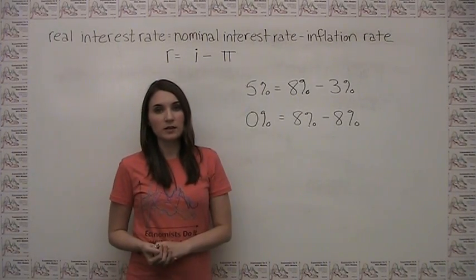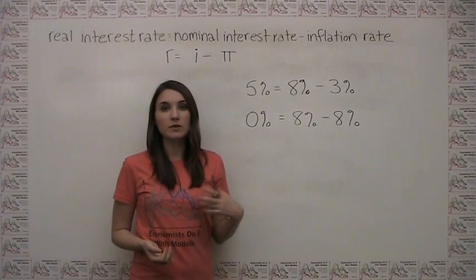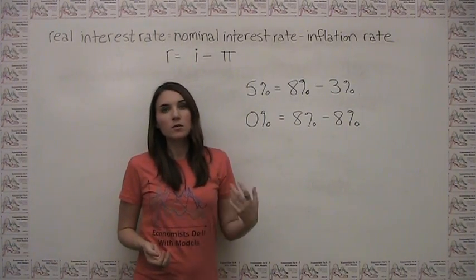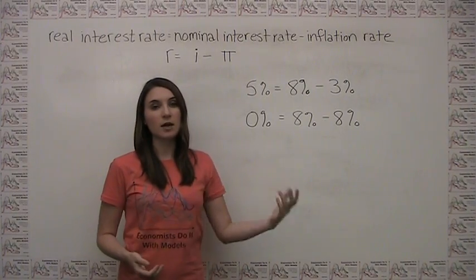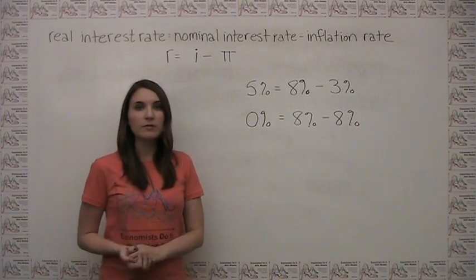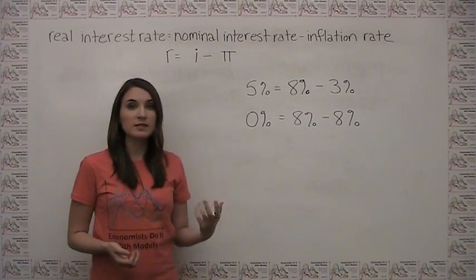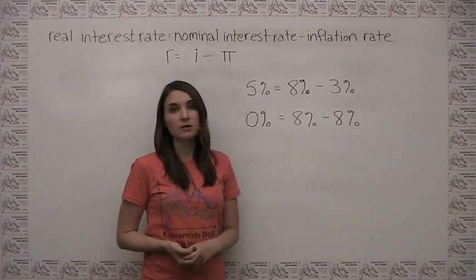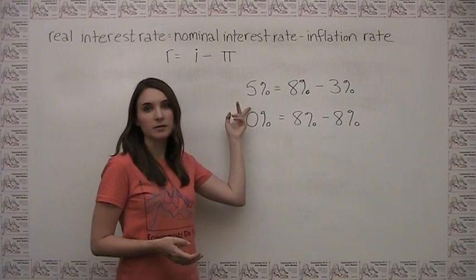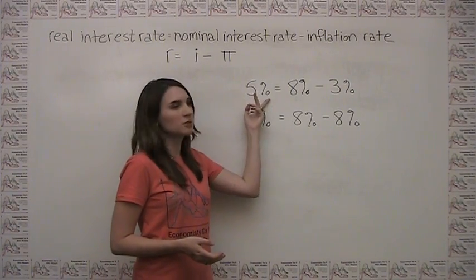Suppose that the nominal interest rate in an economy is 8% per year, but inflation is 3% per year. What this means is that for every dollar someone has in the bank today, she'll have $1.08 next year. However, because stuff got 3% more expensive, her $1.08 won't buy 8% more stuff the next year, it'll only buy 5% more stuff next year. This is why the real interest rate is 5%.